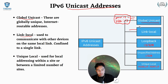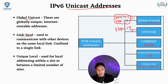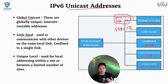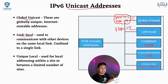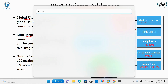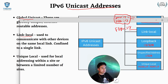Link local addresses are going to be any address with a prefix of FE80/8. These link local addresses are actually going to be created right when an interface comes online, if it's capable of IPv6, and they're going to be used just for communication within our LANs.